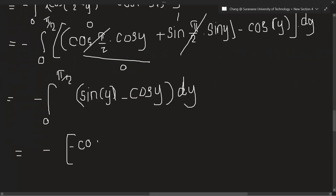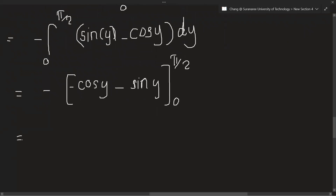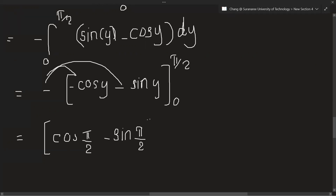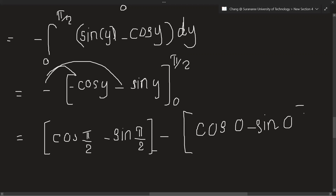Minus cos 1, minus cos y. Integration of sine y. Sine y. Minus sin(pi over 2). Boss by pi over 2. Minus sin(pi over 2). Minus cos 0 minus sin 0. Minus sin 0. This will be 0. Cos(pi over 2) will be 0. So the answer is minus 1 minus 1.